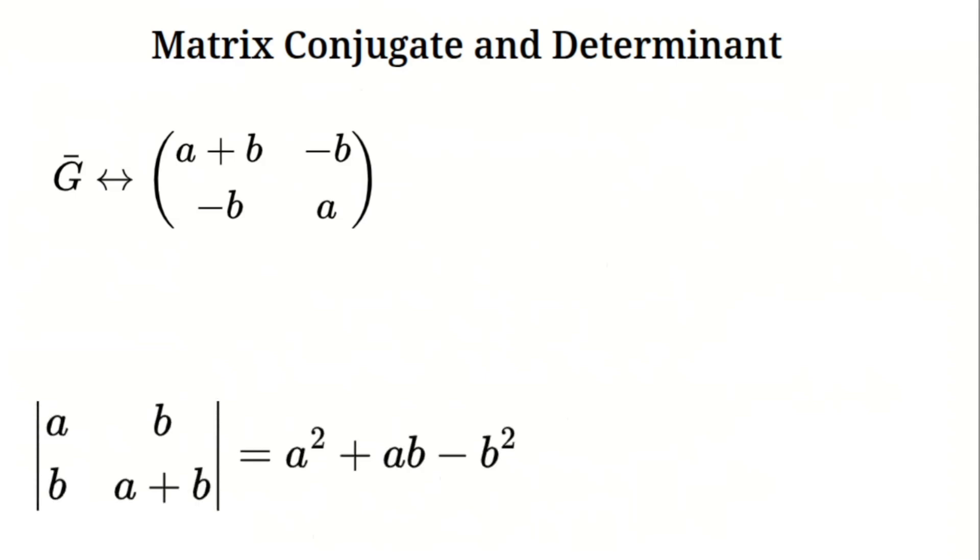Now the determinant for G's matrix, it's A times A plus B minus B times B. That's A squared plus AB minus B squared. Recognize that? It's G times G bar, so the modulus is the square root of the absolute determinant.